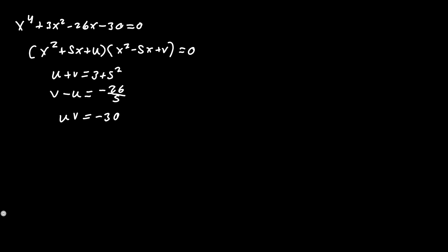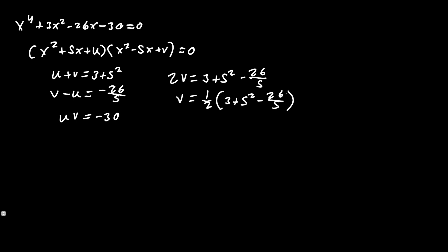And uv is equal to negative 30. To find u and v, we add the first and second equations. Adding top to bottom, we get 2v equals 3 plus s² minus 26 over s. Solving for v: v equals one half times (3 plus s² minus 26 over s). And u is just the sign change, so u equals one half times (3 plus s² plus 26 over s).